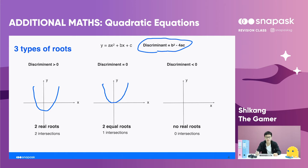When the discriminant is less than zero, there will be no real roots, meaning the graph will not intersect any axis and it will be floating. Here are the three graphs that I have drawn.